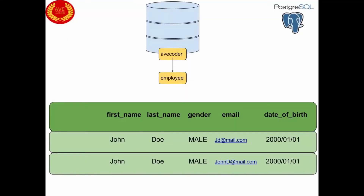Let's imagine a situation. We have a guy called John Doe who is working in our company. He wants to change his email, and for some reason the HR person didn't update the record but rather created another record for the same John Doe with a different email. Or imagine we have two John Does with the same first name and last name, and the only thing different is their email.